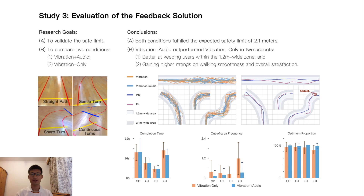Finally, to evaluate whether the multi-modal feedback solution could support a better navigation experience than single-modality feedback, we conducted a lab test with a computer vision module to recognize labeled paths. Guided by the designed feedback, 16 visually impaired participants completed 127 out of 128 trials on 2.1-meter wide basic paths. Results show that vibration plus audio feedback outperformed vibration-only feedback in keeping users within the 1.2-meter wide zone, and gained higher ratings on walking smoothness and overall satisfaction.